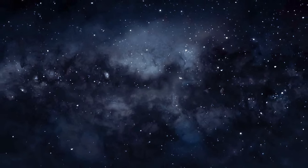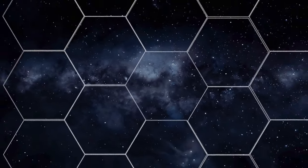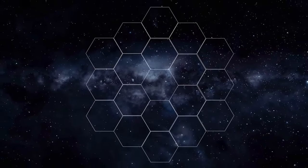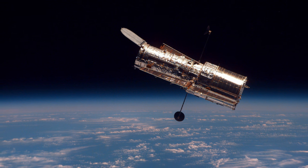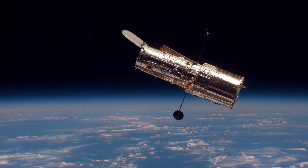At the heart of JWST is its primary mirror, composed of 18 hexagonal segments. This mirror, with a diameter of over 21 feet, is nearly three times the size of the Hubble Space Telescope's mirror.